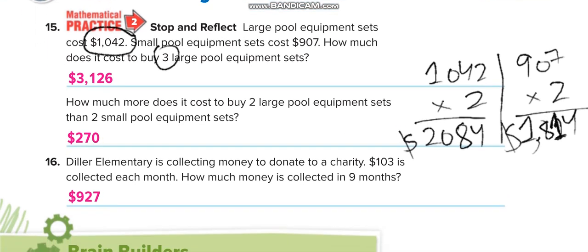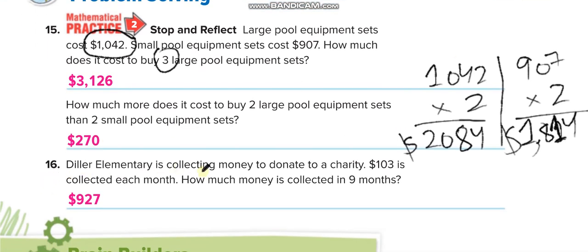Next one. Diller Elementary is collecting money to donate to a charity. $103 is collected each month. How much in 9 months? You'll multiply 9 by 103, which equals $927.